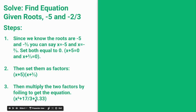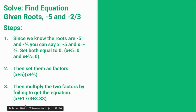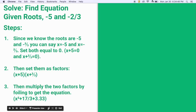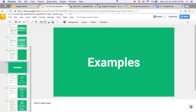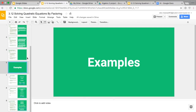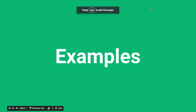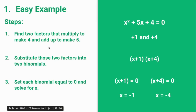Thank you for tuning in. Now we are going to move on to some examples. Our first example is an easy example: x squared plus 5x plus 4 equals 0.